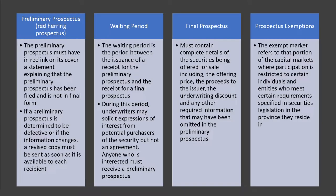Some more definitions: The preliminary prospectus, or red herring prospectus, must have in red ink on its cover a statement explaining that the preliminary prospectus has been filed and is not in final form. If a preliminary prospectus is determined to be defective or if the information changes, a revised copy must be sent as soon as it is available to each recipient. There is also a waiting period between the issuance of a receipt for the preliminary prospectus and the receipt for a final prospectus. During this period, underwriters may solicit expressions of interest from potential purchasers but cannot get a binding agreement — anyone who is interested must receive a preliminary prospectus.